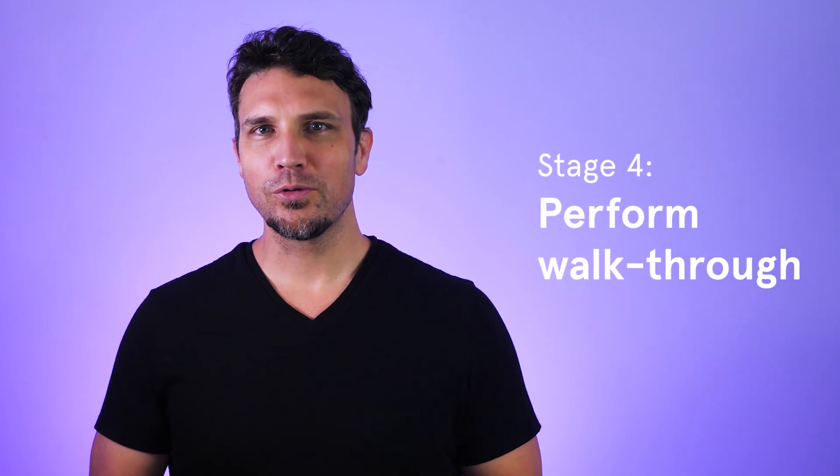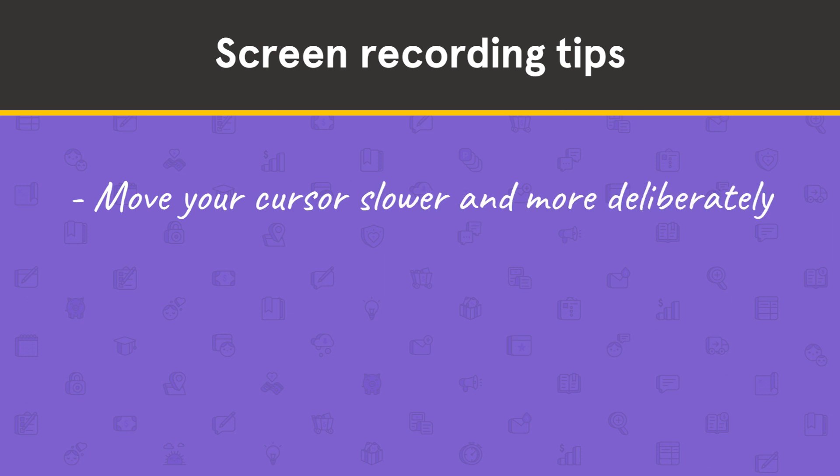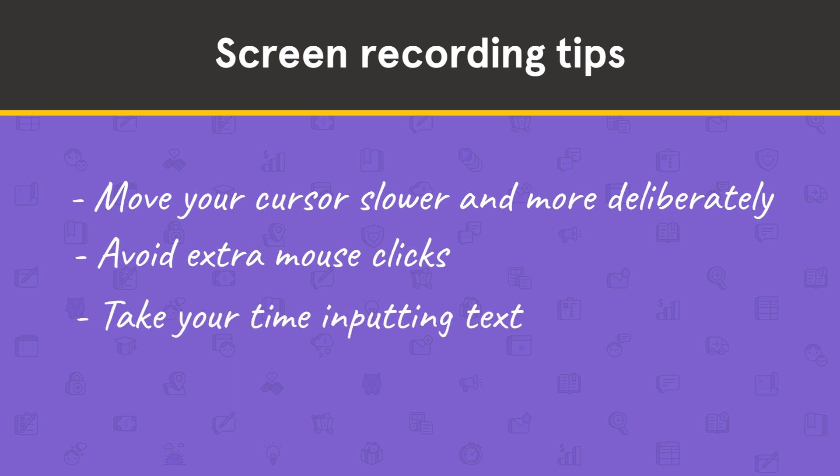Stage 4: Perform walkthrough. I use the word perform intentionally here because that's actually what you're doing. When you perform a screen recording, you're more intentional about how you move your mouse, where you click, and the order in which you walk your viewer through the app or website. A good screen recording performance helps your viewer focus on the right things and keeps them from becoming distracted. Here are a few tips: move your cursor a bit slower and more deliberately than normal, avoid extra mouse clicks, take your time inputting text — you can always speed this up later — and it's okay to record in takes. After all, this is a performance.